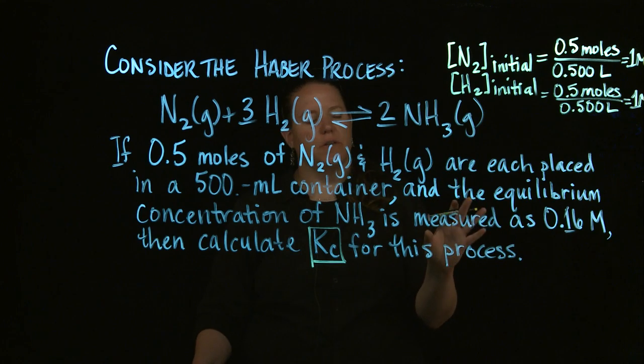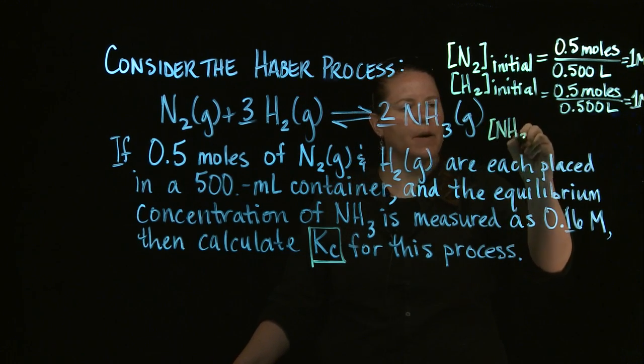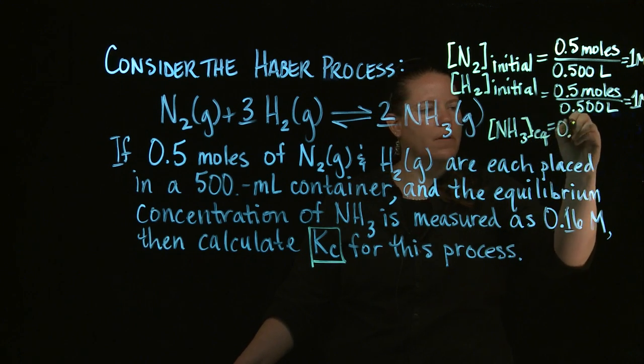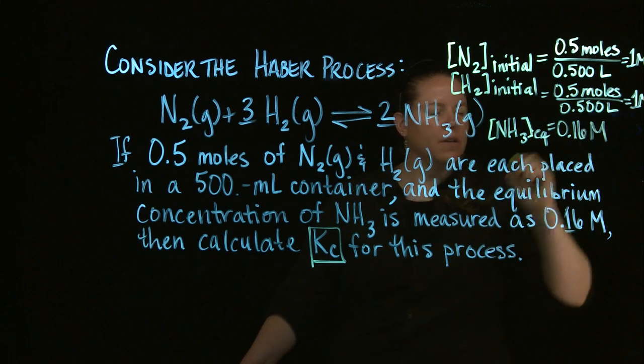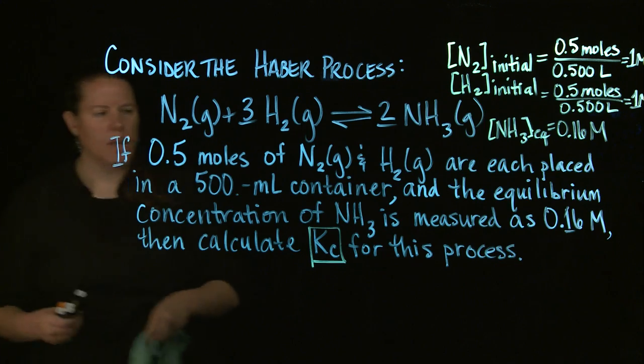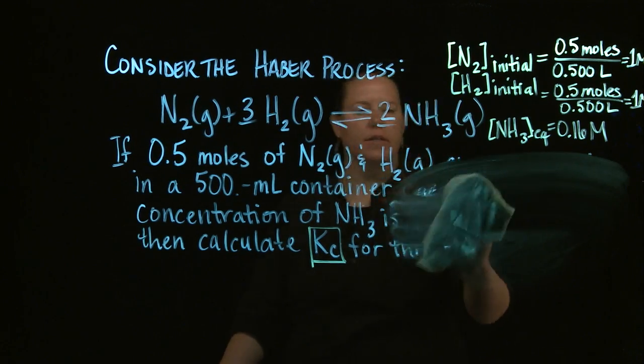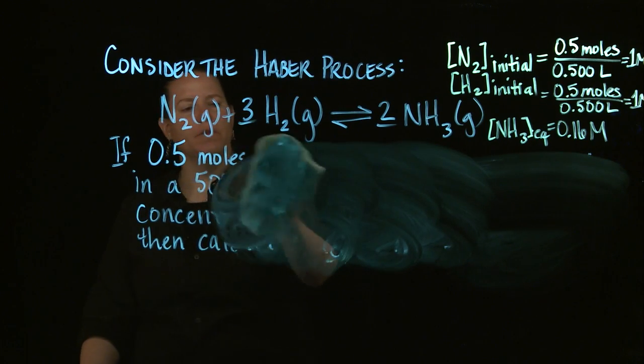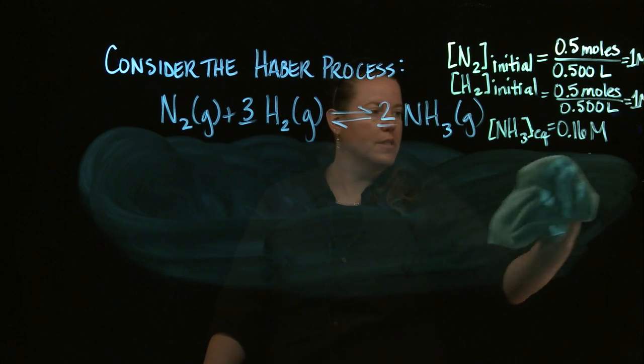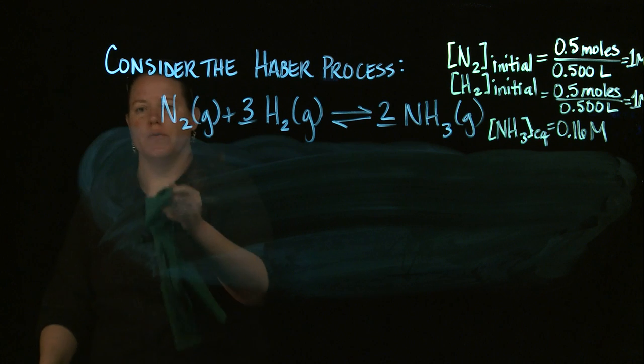In terms of the equilibrium concentration, we do need to write that down too because I'm about to erase all of this. So equilibrium concentration of NH3 is 0.16 molar. Having said that, let's get rid of this whole thing. It'd be great if I could keep it up here the whole time but I can't. I don't got enough room, so let's move on with life and see what we can do here.